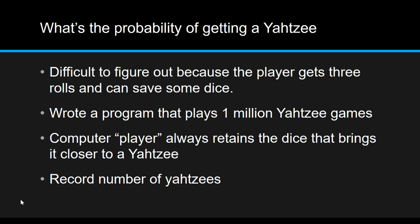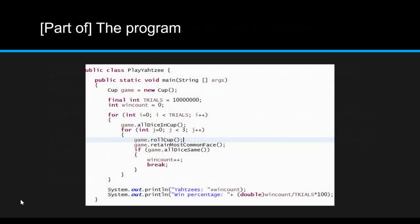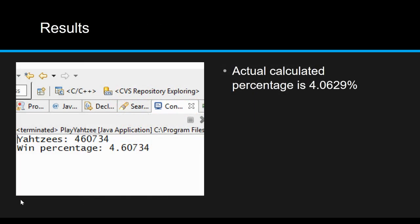An example of a simulation: let's say we're trying to figure out the probability of getting a Yahtzee. It's difficult to calculate because the player gets three rolls and can save some dice, so you can write a program that plays one million Yahtzee games — that very high number gives the most accurate data. The computer player always retains the best dice, and you record the number of Yahtzees. Based on that specific simulation program, the result is a percentage of just over four percent.